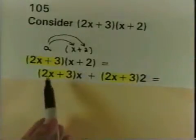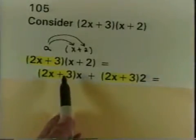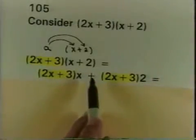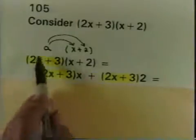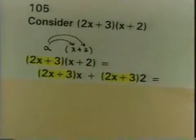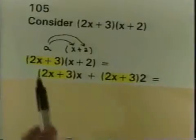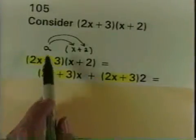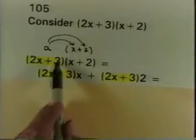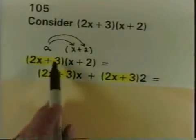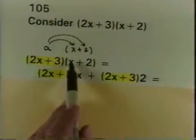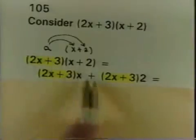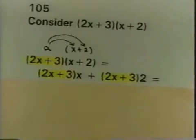So I have the a — the 2x plus 3 — times x, plus the 2x plus 3 times 2. I'm treating 2x plus 3 as if it were one factor: 2x plus 3 times the x, and 2x plus 3 times the 2.